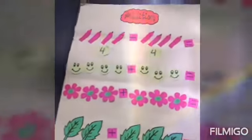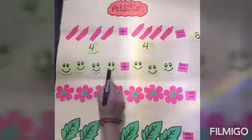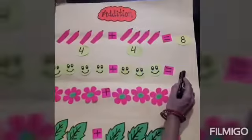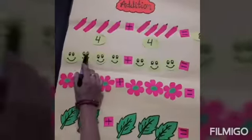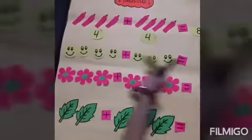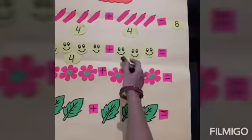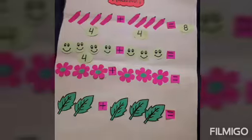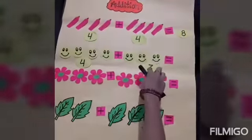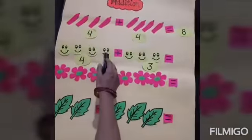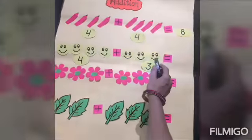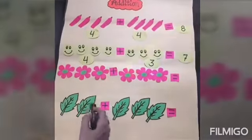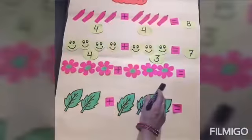Now some smileys are given here. We will count the smileys first of all and write the total number. Start: one, two, three, four — four smileys here. Now count the next group: one, two, three — we will write three. Now count all the smileys: one, two, three, four, five, six, seven — we will write seven in the total.